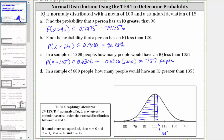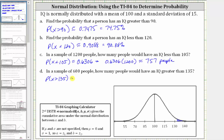For our last question, in a sample of 600 people, how many would have an IQ greater than 135? The IQ score of 135 is on the far right. Because we're looking for the number of people out of 600 with an IQ greater than 135, we need to find the small area on the right. We'll first find P(x > 135), then multiply that probability by 600 to determine the number of people. This will be an approximation.